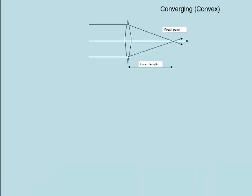Lenses. Here we have a converging lens, which is a convex shape — thicker in the middle. The rays coming in from the left are parallel. The lens brings the rays together at what's known as the focal point, but that only happens if the rays are parallel. The focal point is the focal length beyond the lens — the distance from the lens to where parallel rays are brought together.